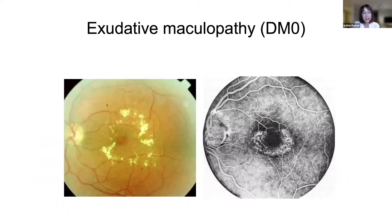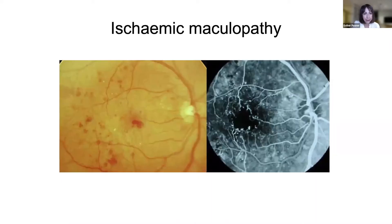This shows the exudative side of macular edema — a very typical picture. On the left, exudative maculopathy with exudates in the retinal layers, and on the right a fluorescein angiogram showing leakage in the parafoveal area.